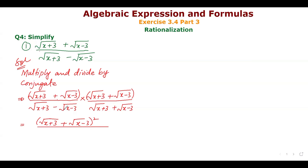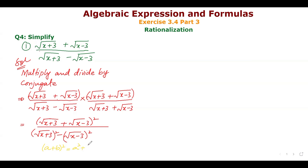Here we apply the identity: a minus b times a plus b equals a squared minus b squared. For the numerator, we apply the formula a plus b whole squared equals a squared plus 2ab plus b squared.